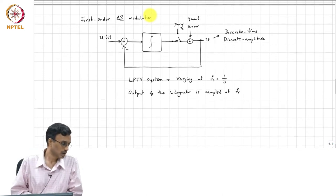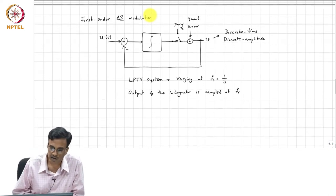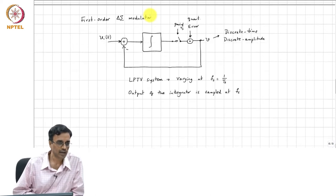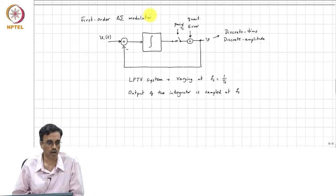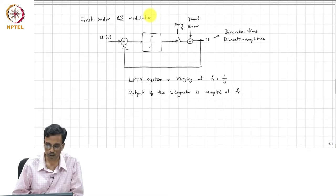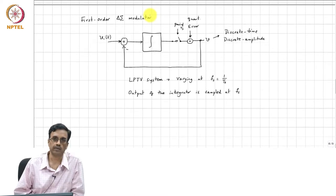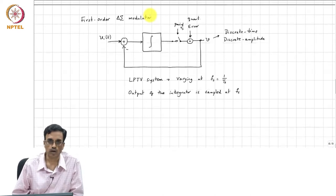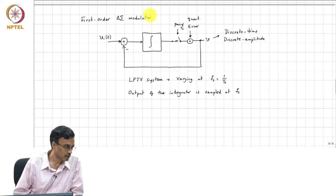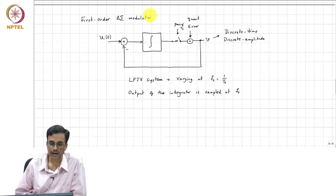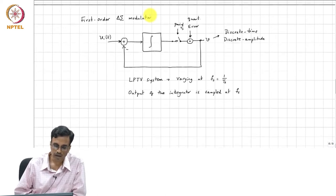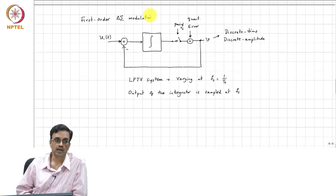Delta-sigma modulators or delta-sigma data converters are extremely important in practice. You are probably carrying maybe twenty of them in your phone right now. They are used all the way from sensor interfaces to wireless transceivers. In many, many practical useful applications, we have LPTV systems, and what is relevant is the sampled output of an LPTV system.